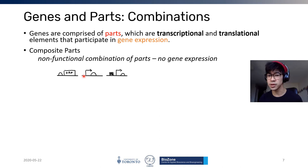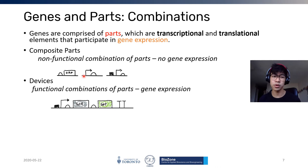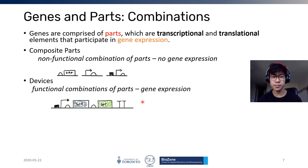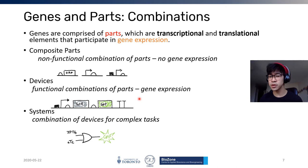People like to design sets of promoters and RBS together to control the level of transcription or translation. The second category are devices — these are what we canonically know as genes, and they do have gene expression. The simplest devices have just one ORF, but some have two ORFs. Most iGEM teams work with devices that encode for one protein or RNA from one ORF.